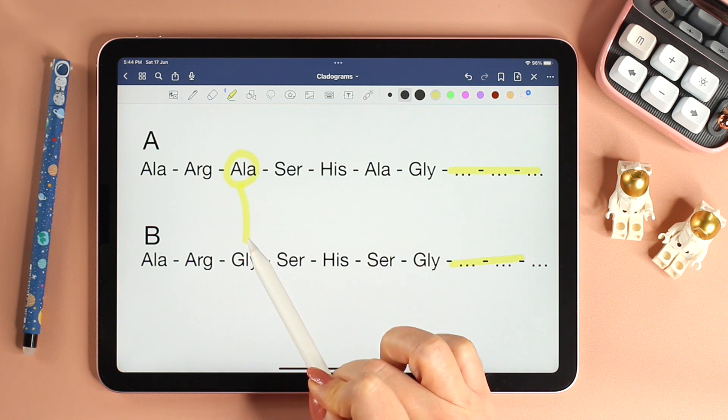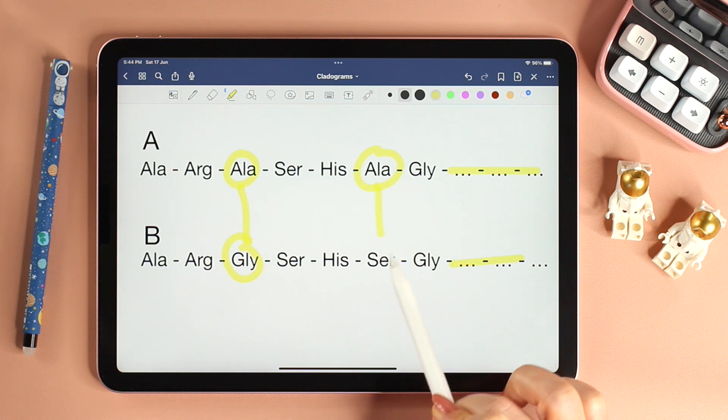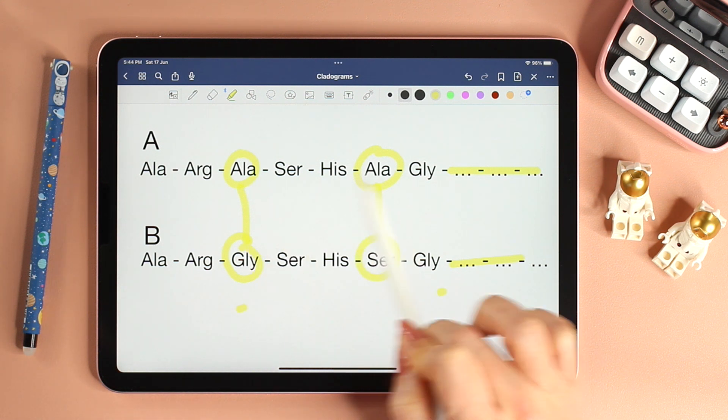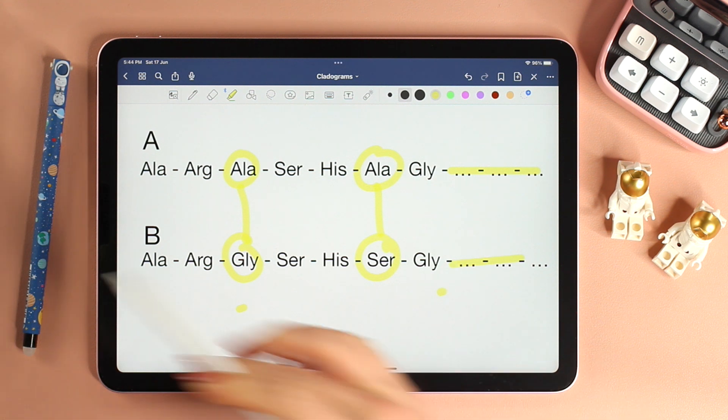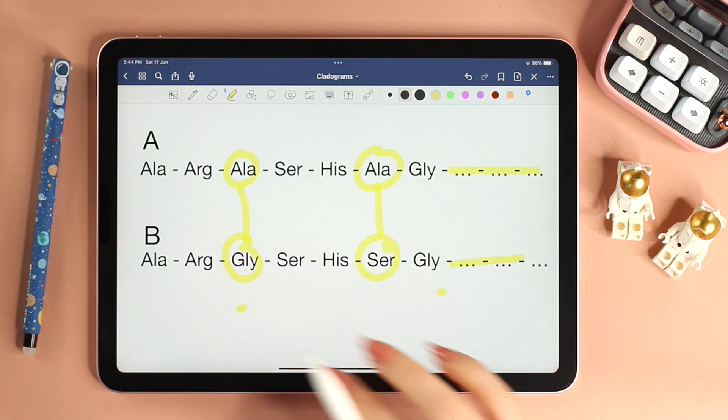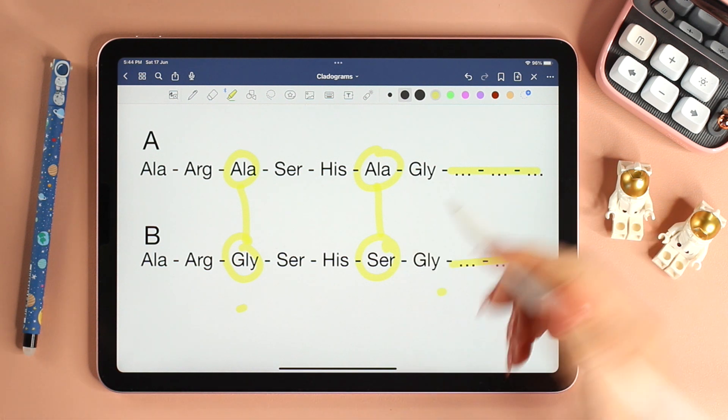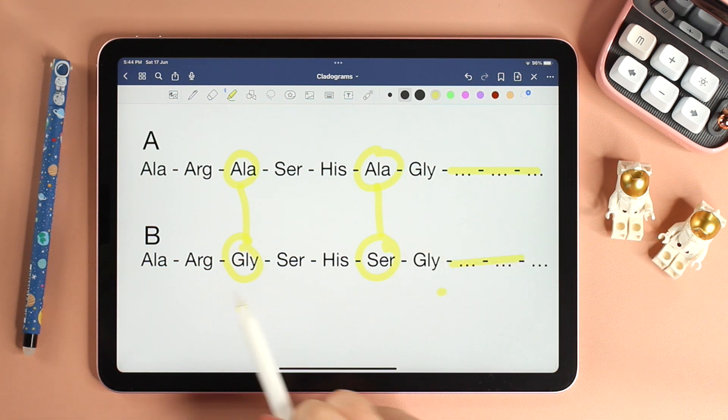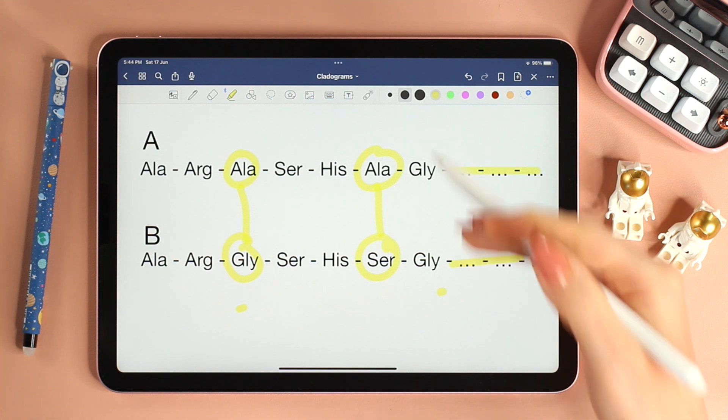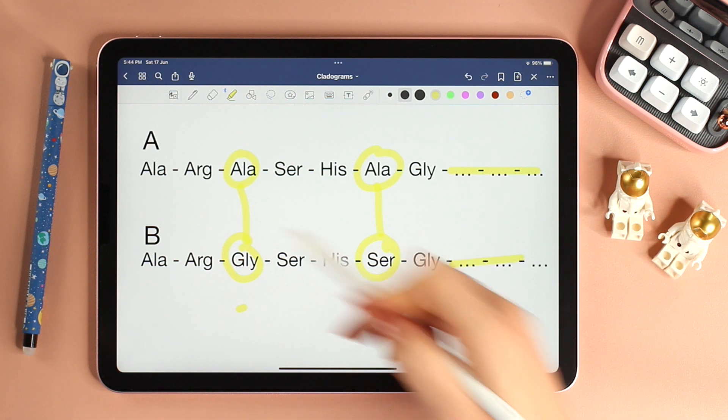Alanine is replaced by glycine in B, and here alanine is replaced by serine in B. So there are two different amino acids within the sequence. The less different they are, the more similar they are. These two are only different at two amino acids, which means they are very similar to each other.